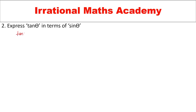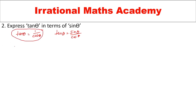Now let us express tan θ in terms of sin θ. We can write tan θ = sin θ / cos θ. In this question they asked us to write tan θ in terms of sin θ, so the sin θ part is okay, but in the denominator we have cos θ. This part is not required — what is required is to convert cos θ also into terms of sin θ.